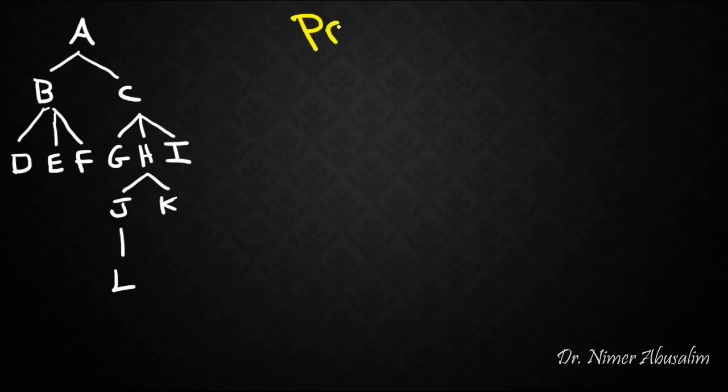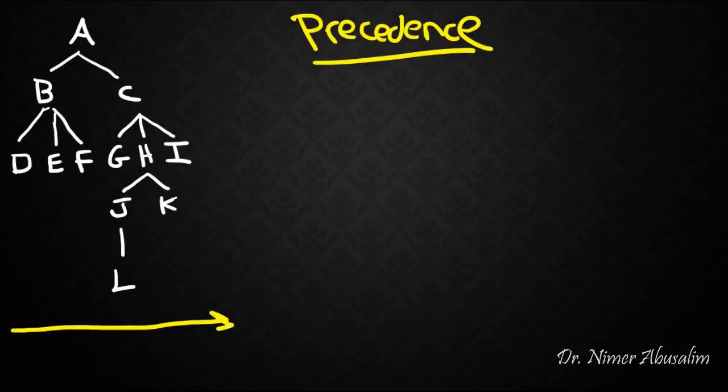Now we can talk about the notion of precedence. Precedence generally means that you show up before something else. So for example, if we were to look at this tree and take it like a normal English sentence going from left to right, which one comes first? Does D come first or E? Picture this was some actual words like the, nice, car. Which comes first, the or nice? Of course, the comes first, then nice.